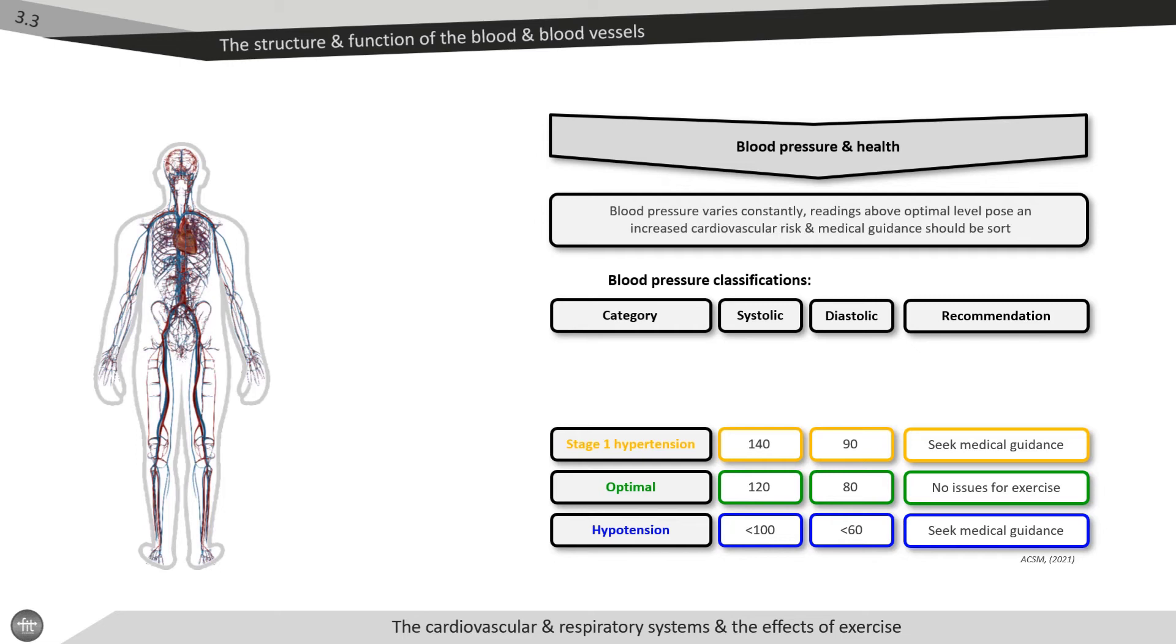These individuals will require a checkup from their GP and must either be referred or cleared to exercise ahead of any intervention. Normal ranges of blood pressure are typically between 100 and 130 systolic and 60 to 85 diastolic. However, individuals with a blood pressure above 160 over 100 are classified as high risk individuals.